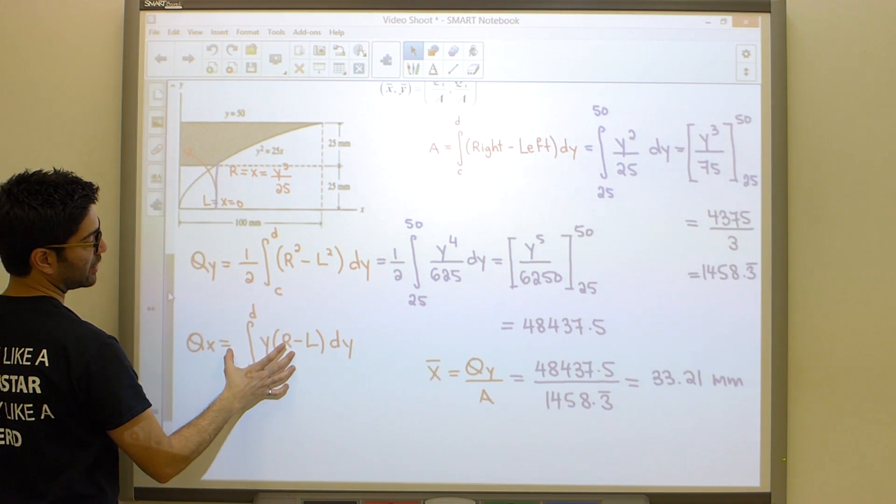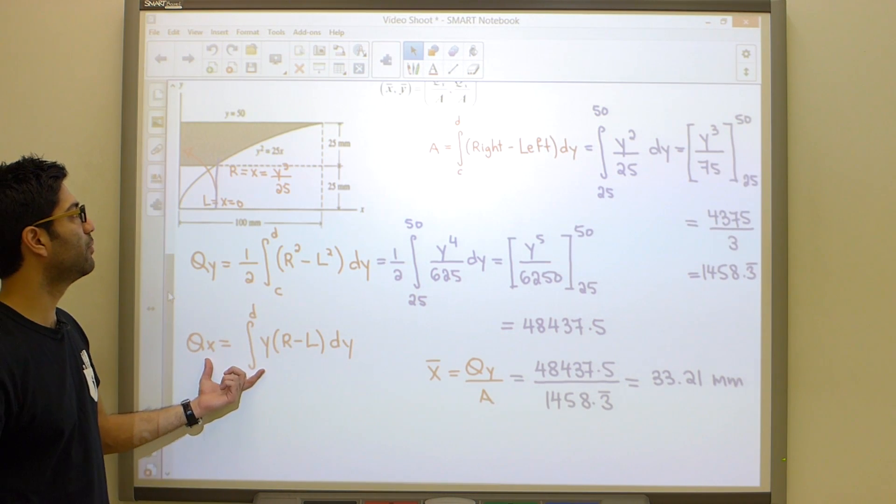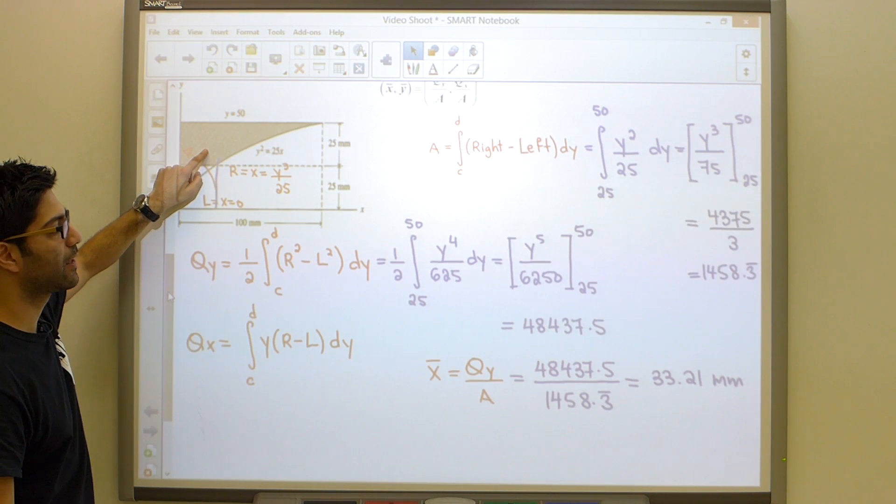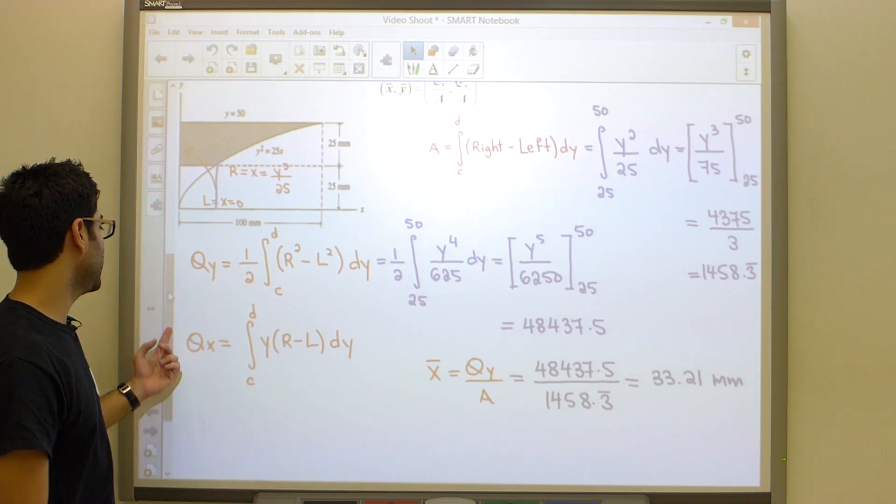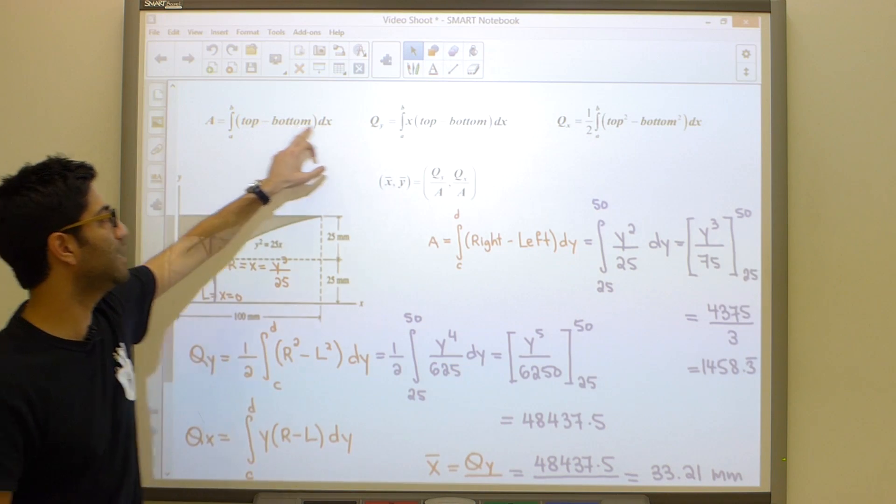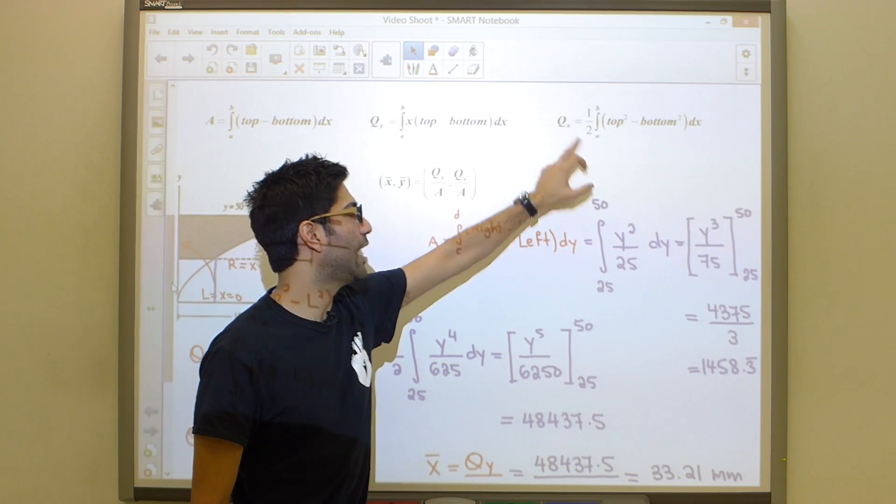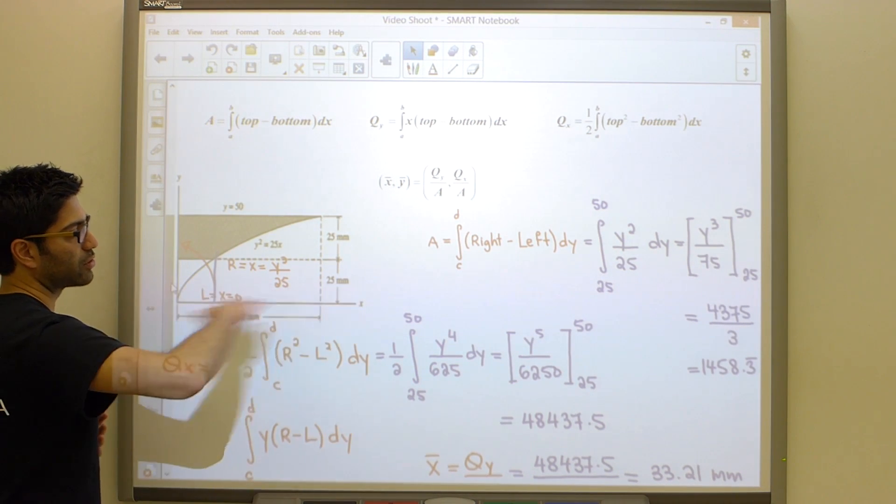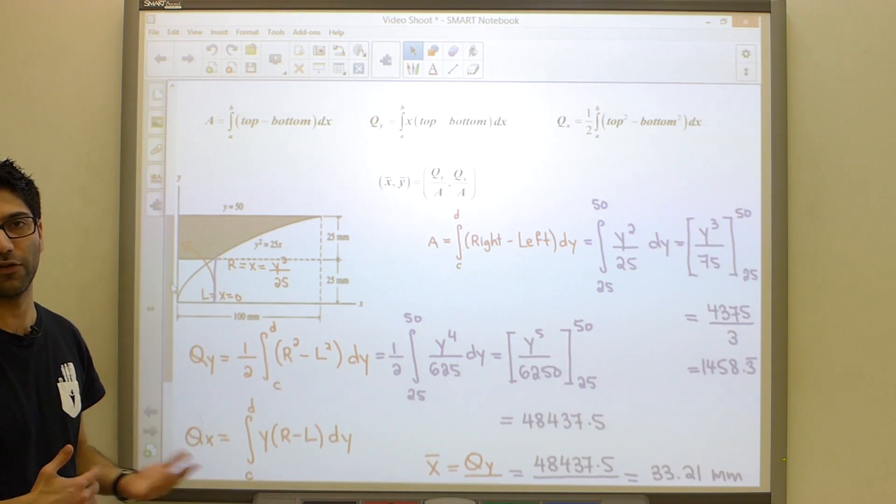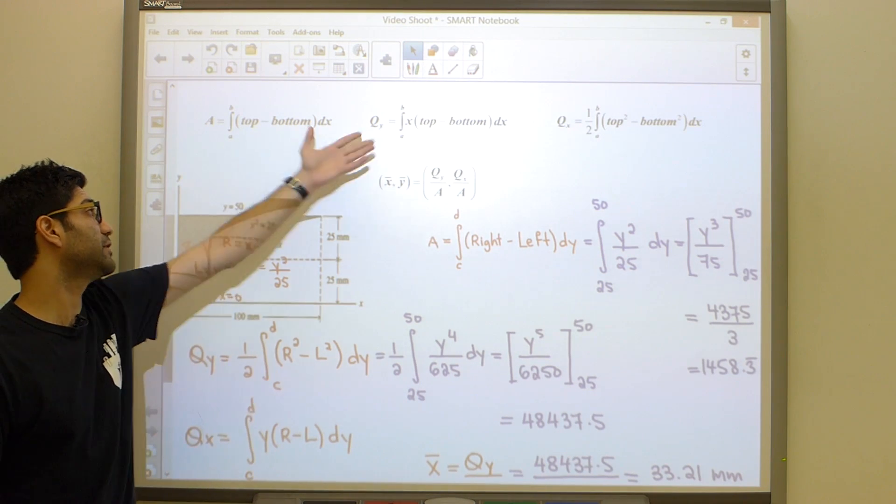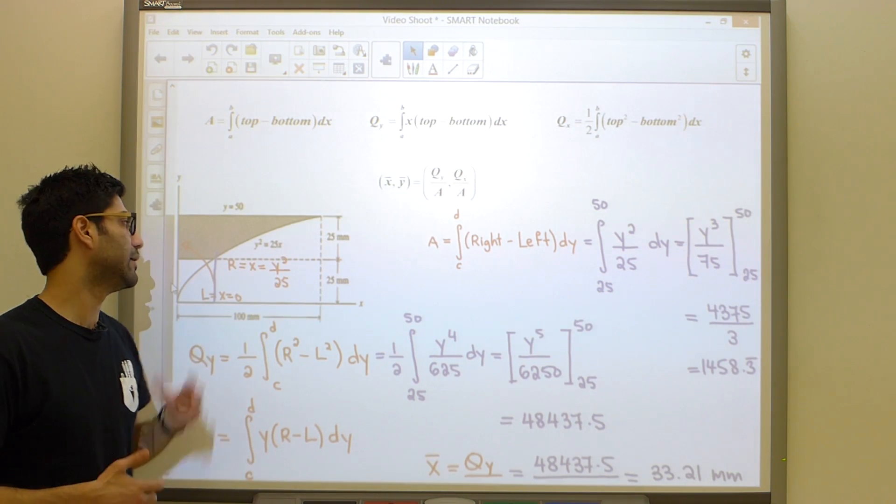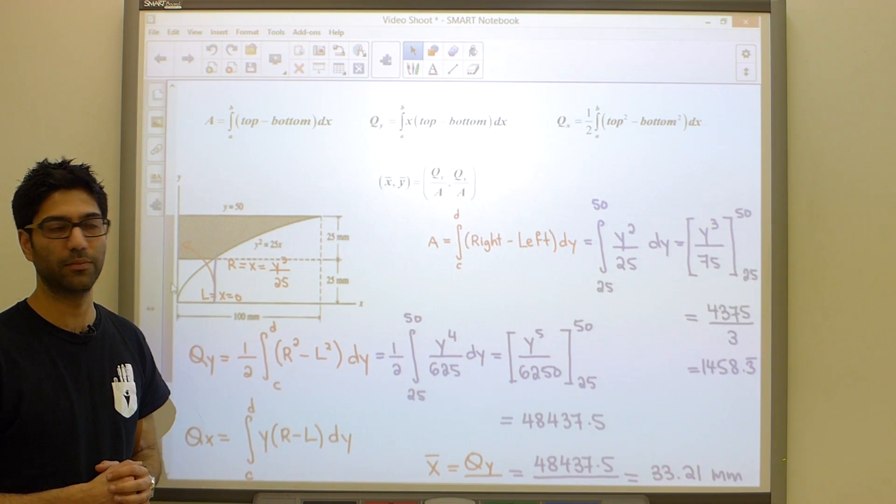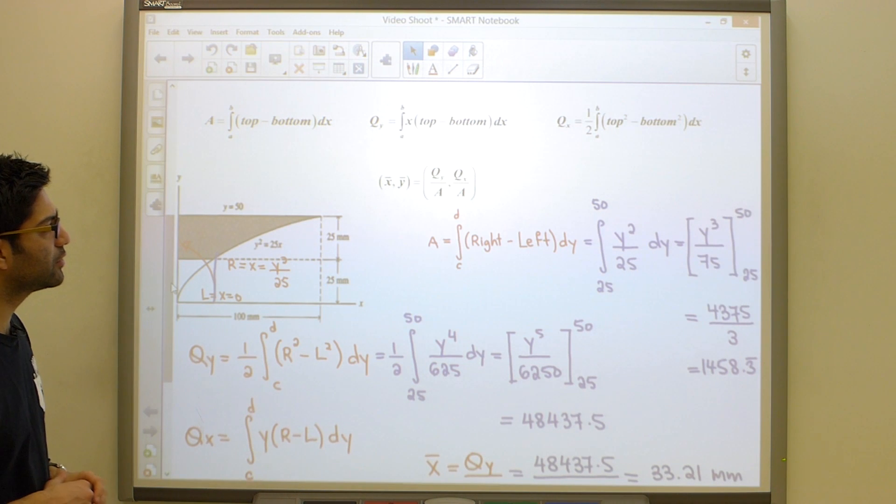So the moral of the story here is the purpose of this question was to show you how you can take these equations and manipulate them to do right minus left instead of top and bottom. Use horizontal bars of integration instead of vertical bars of integration. So this is one level of difficulty that they can add to the problem. And now you know. Okay guys, let's move on to the next problem.